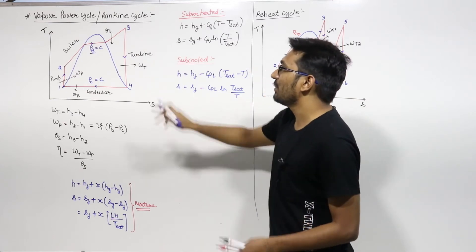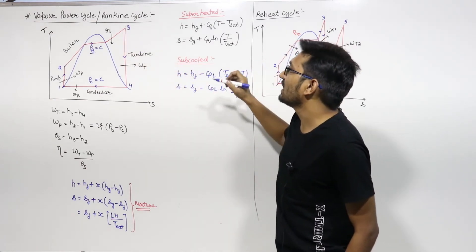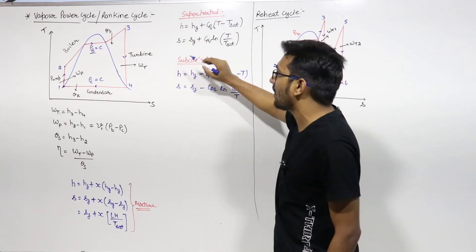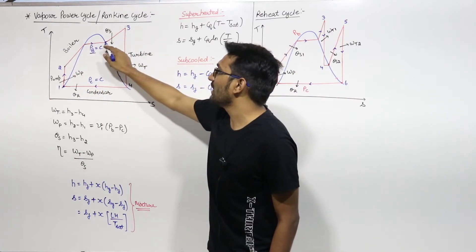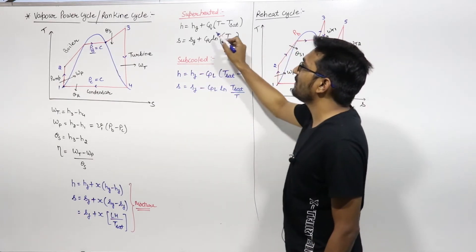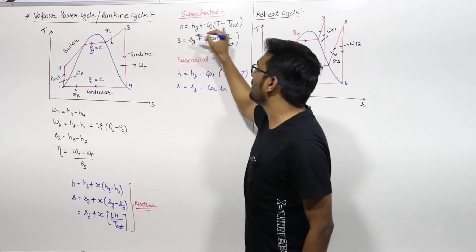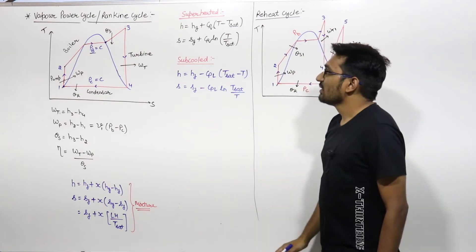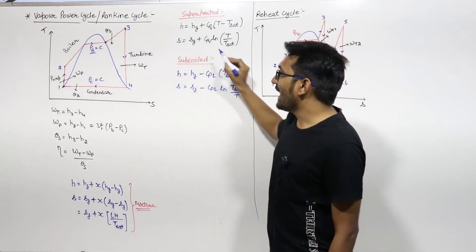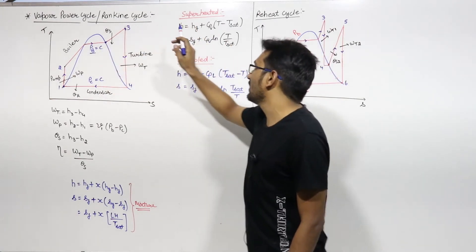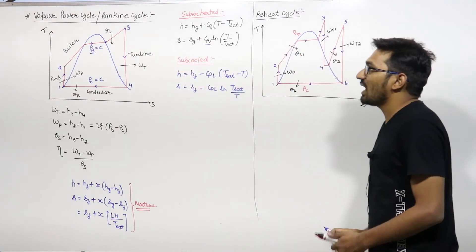If point 4 is in the superheated region, then for the superheated region the entropy term involves T upon T-saturation. T is the temperature T3, upon T-saturation. From there you can find S3.